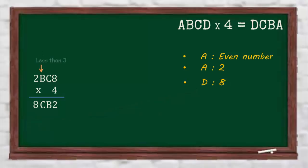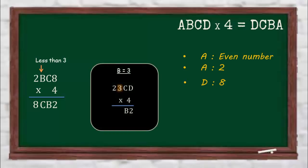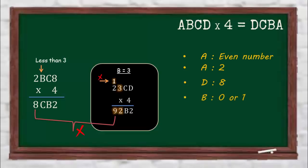If we analyze carefully, the value of B has to be less than 3. Because if B equals 3, then 4 times 3 is 12, so we carry the 1. And 4 times 2 plus 1 gives 9, but we know the value of D is 8. So B has to be less than 3 to avoid a carry over. But B can't be 2 because A is 2. So B is either 0 or 1.